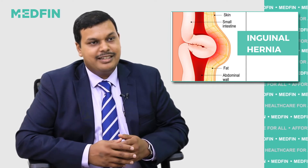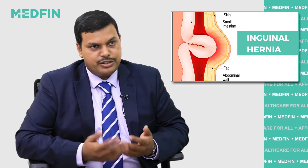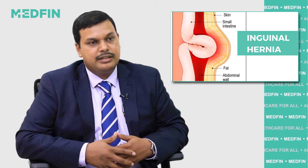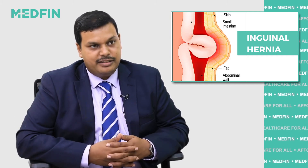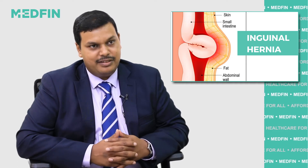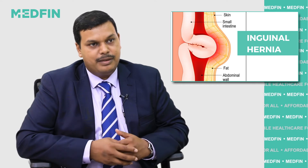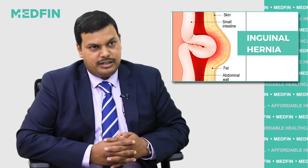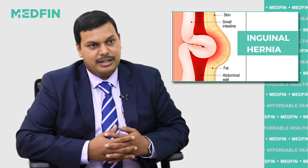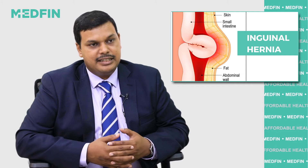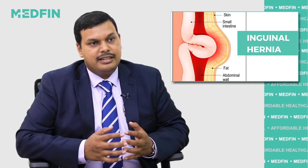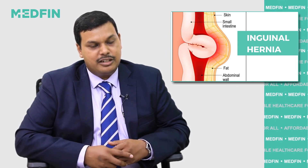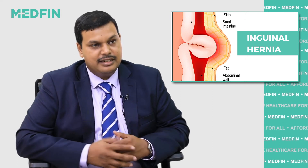The abdominal pressure may increase due to various reasons like continuous cough, wherein the person keeps coughing involving the chest and the abdomen. Constipation, wherein the patient has to strain excessively and continuously multiple times while passing stools, and conditions like benign prostatic hyperplasia or strictures in the urethra where the person has to strain while passing urine. These conditions increase the abdominal pressure to a point wherein the abdominal wall tends to weaken over time, causing hernia.